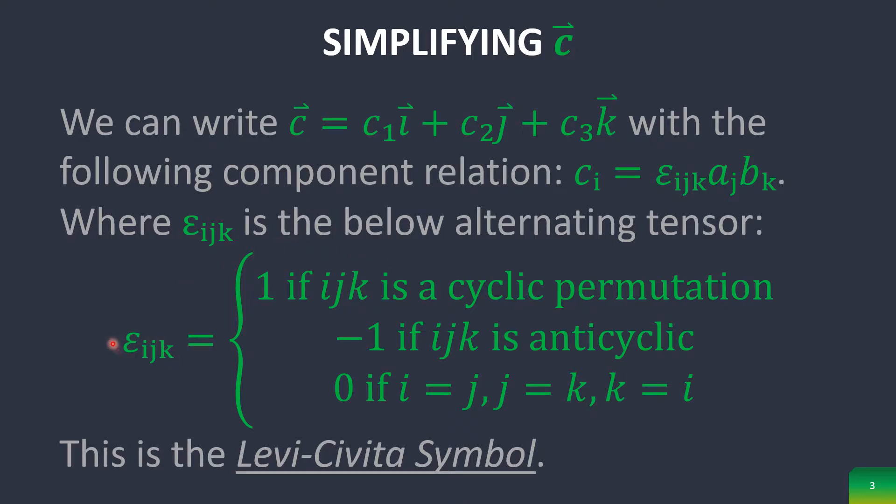Basically, what this says is that E sub ijk is equal to one if ijk is a cyclic permutation. Meaning that, say, if you have the numbers one, two, three, this is cyclic because it goes in order one, two, three. If you had, for example, three, one, two, this is cyclic because it goes one, two, three.